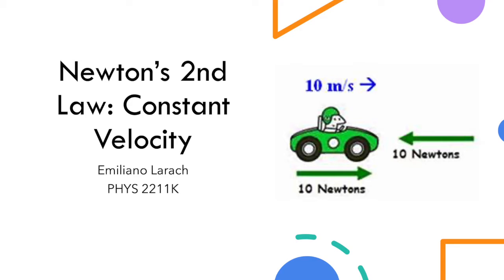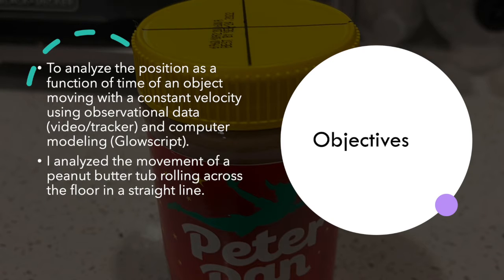I'm in Dr. Fenton's physics 2211 section. The objectives of this laboratory was to analyze the position as a function of time, or velocity, of an object and see that it's moving at a constant velocity with observational data provided by the software tracker and a video, and computational modeling like Glowscript.